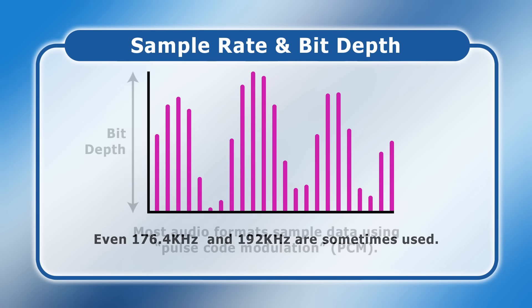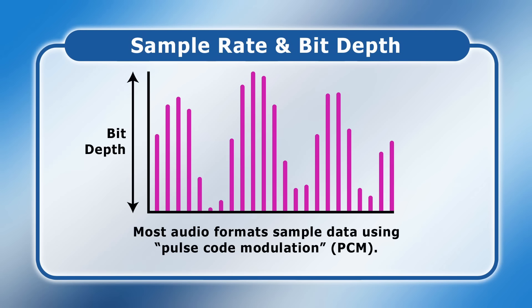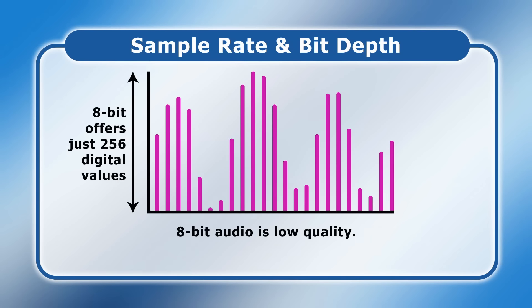Turning to bit depth, most audio formats sample data using a method called pulse code modulation or PCM, which allocates a fixed number of bits to represent the height of the audio wave. So bit depth refers to the number of bits of data allocated to each sample. 8-bit audio is low quality, as the magnitude of the audio wave has to be recorded on a scale that offers just 256 digital values.